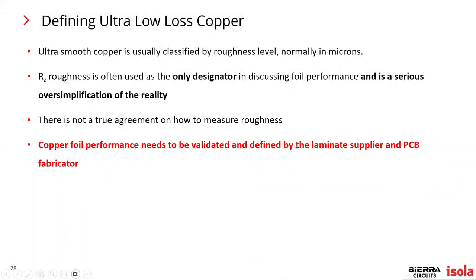Ultra-low-loss copper is usually classified by roughness level, normally in microns using the RZ value. Using RZ as the only designator is a big mistake and a serious oversimplification of reality. For designs going up to PAM4 224, this is very important to understand about the copper foil. There is no true agreement on how to measure roughness, but SA and SR type measurements are going to be the standard going forward.